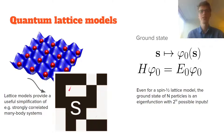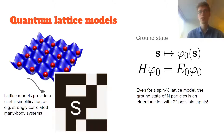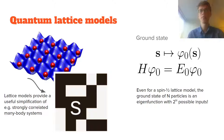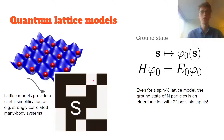Quantum lattice models are simplifications useful for systems where particles are confined to a lattice. For example, in quantum computing, particles on a square lattice have interactions determined by their spin orientations. Each particle has either spin up or spin down, which can be represented as a black or white square, where black is spin up and white is spin down.